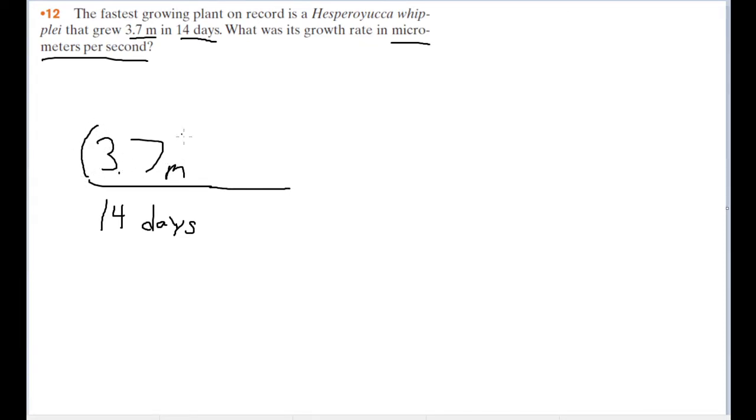To get meters into micrometers, if you understand your unit prefixes, you'd know that micro means million. So there are a million micrometers in a meter. Let's add a conversion right here: for every meter, that is a million, or 10^6 for short, micrometers—or microns, as micrometers are also called. Fun fact.